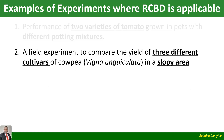Another example is a field experiment to compare the yield of three different cultivars of cowpea in a slopey area. The three different cultivars of cowpea are our treatments. We are planting them on a slopey area, and we know from field experiments that when you have a slopey area, fertility tends to differ between the uphill side and the downhill side. So we have to partition the area based on fertility gradient, and then we plant our three cultivars of cowpea within each block.